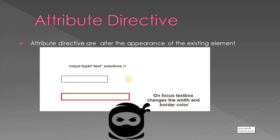One example is an input box with an auto-grow attribute, so when it gets focus it will change the border as well as the width of the text box. This can be implemented by using a custom auto-grow directive.